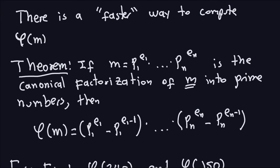Hello and welcome again. Last time we were talking about computing phi of a number, which you remember is the number of numbers between 0 and m minus 1 that are relatively prime with m. If you don't remember that, I advise you to go back and watch the previous video where we talked about the definition of this function and did a couple of computations with small numbers.